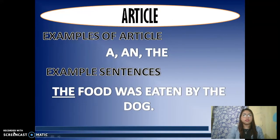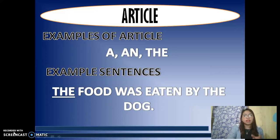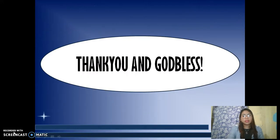The last part of speech is the article. Examples are a, an, and the. In the sentence 'The food was eaten by the dog,' articles function as modifiers or determiners. An article is always followed by a noun — for example, the food, where the is the determiner and food is the noun. To wrap it up, a part of speech explains how a word is used in a sentence. That would be all — I hope you've learned something. Thank you and God bless.